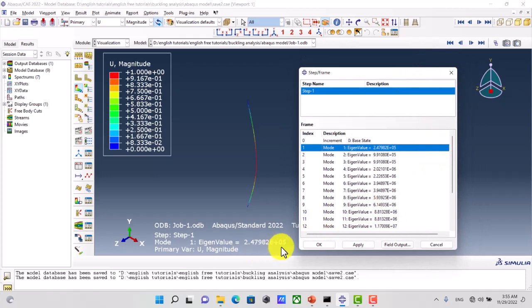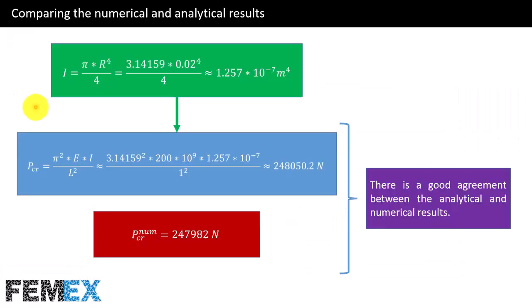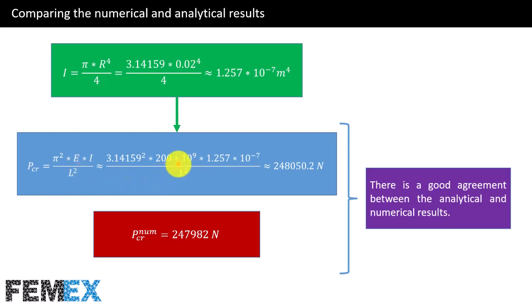Now we must compare this value with the analytical solution. Here we have the analytical formula to calculate the critical buckling force. I have calculated the second moment of area I and substituted it into the formula along with the Young's modulus and the beam length of 1 meter. The analytical buckling force and the numerical value show good agreement, confirming that our modeling and simulation was correct.